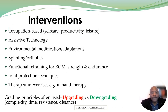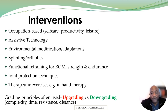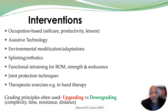Moving on to the interventions, we can have occupation-based interventions where we focus on specific occupations meaningful to the service user and help them engage in those occupations. Sometimes we might use assistive technology, environmental adaptations or modifications, splinting and orthotics. Functional retraining, range of motion exercises, strengthening exercises, and endurance work can also be used, though some of these may not be purely occupation-based.